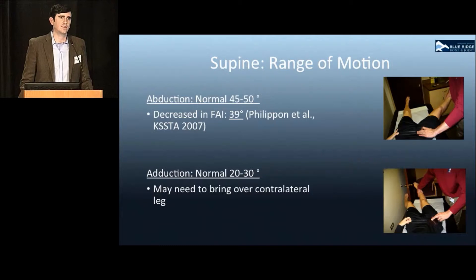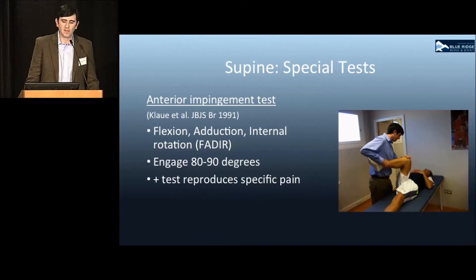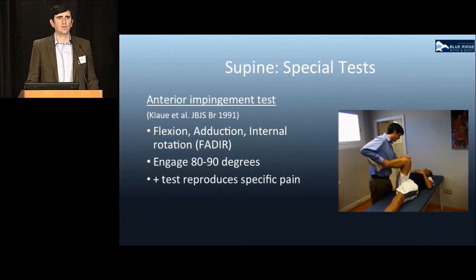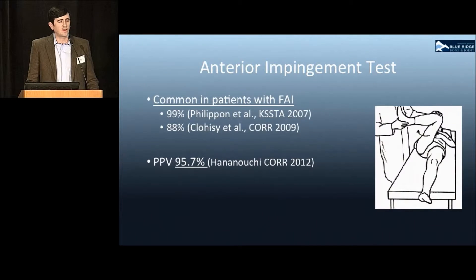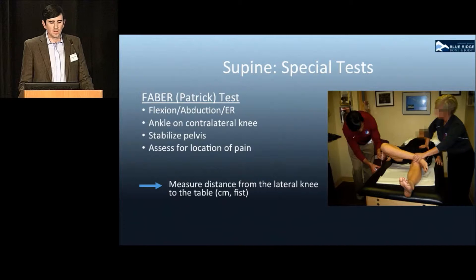Abduction is normally 40 to 50 degrees and adduction is 20 to 30, also performed supine with care to stabilize the pelvis for accurate measurement. The anterior impingement test is our workhorse of supine special testing, which includes flexion, adduction, and internal rotation. The hip tends to engage between 80 and 90 degrees. A positive test reproduces the patient's pain, usually deep in the anterior aspect of the groin, and has a high positive predictive value for intra-articular hip pathology.